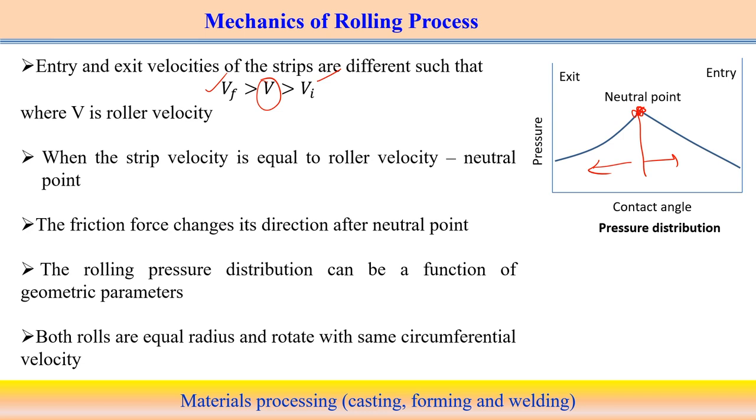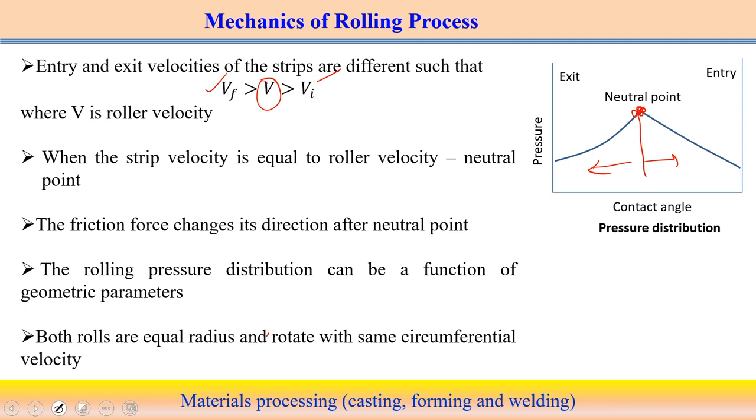It is necessary to calculate the total force acting on the roller for design purposes, to ensure the system rigidity can sustain the rolling forces. To calculate total forces, we need to understand the pressure distribution between the roller and the strip. From the pressure distribution we can calculate the total rolling forces. In a symmetric rolling setup, both rollers have the same rotational velocity, circumferential velocity, and radius.